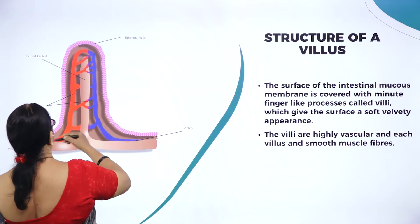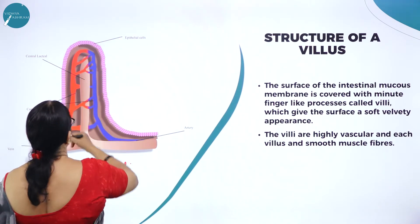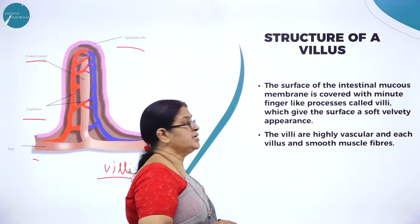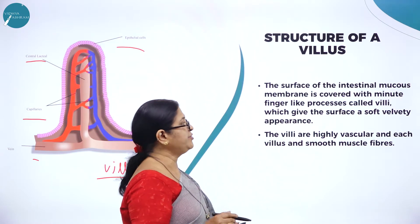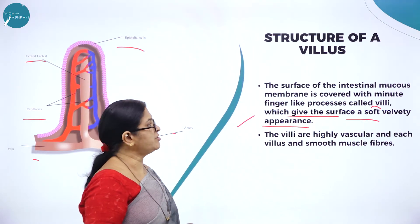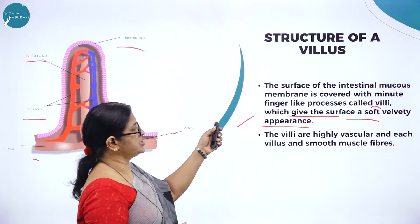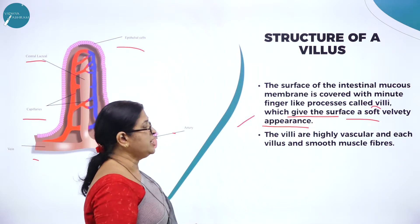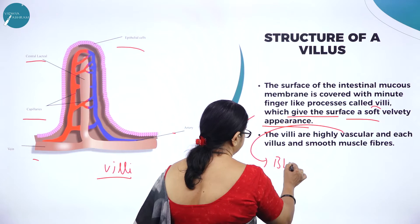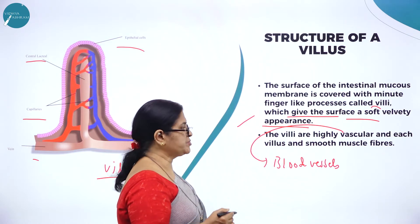Here you can see the structure of the finger-like projections. The inner lining of the wall of the small intestine has finger-like projections called villi. Here you can see the finger-like projections with central laceal capillaries, epithelial cells, and artery. The surface of the intestinal mucous membrane is covered with minute finger-like projections called villi which give the surface a soft, velvety appearance. The villi are highly vascular — meaning supplied with blood vessels — and each villus is made up of smooth muscle fibers.